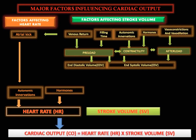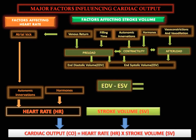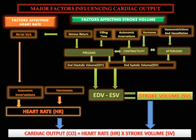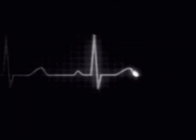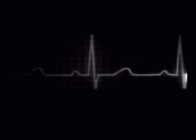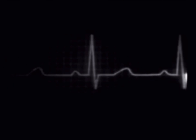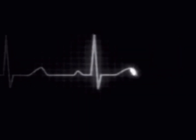Contractility impacts end-diastolic volume, as does afterload. To conclude, cardiac output is the product of heart rate multiplied by stroke volume, and stroke volume is the difference between end-diastolic volume and end-systolic volume.